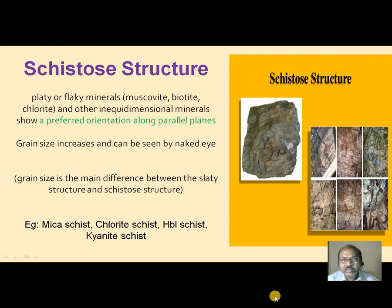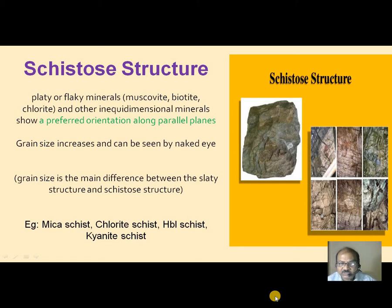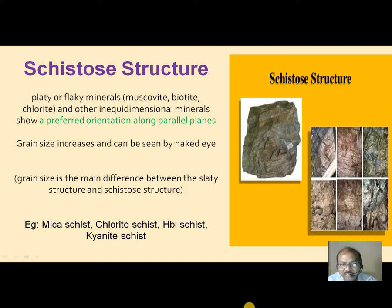Cysto-structure. Flaky minerals or platy minerals — muscovite, biotite, chlorite — are called as flaky minerals or platy minerals. And some other inequidimensional minerals, which have no defined shape, show a preferred orientation parallel to the planes. In such a case, we say the rock is exhibiting cysto-structure. That means flaky minerals and inequidimensional minerals orient along parallel to the planes. Mica schist, chlorite schist, hornblende schist, and kinzigite schist are best examples for cysto-structure.